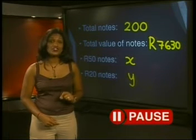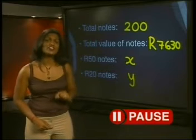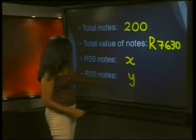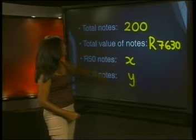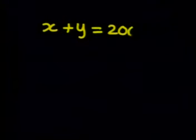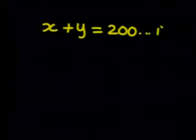Can you write an equation using this information? Have another look at everything we know. The number of 50 Rand notes plus the number of 20 Rand notes is equal to 200. So we write this as X plus Y is equal to 200. And we'll call this equation 1.